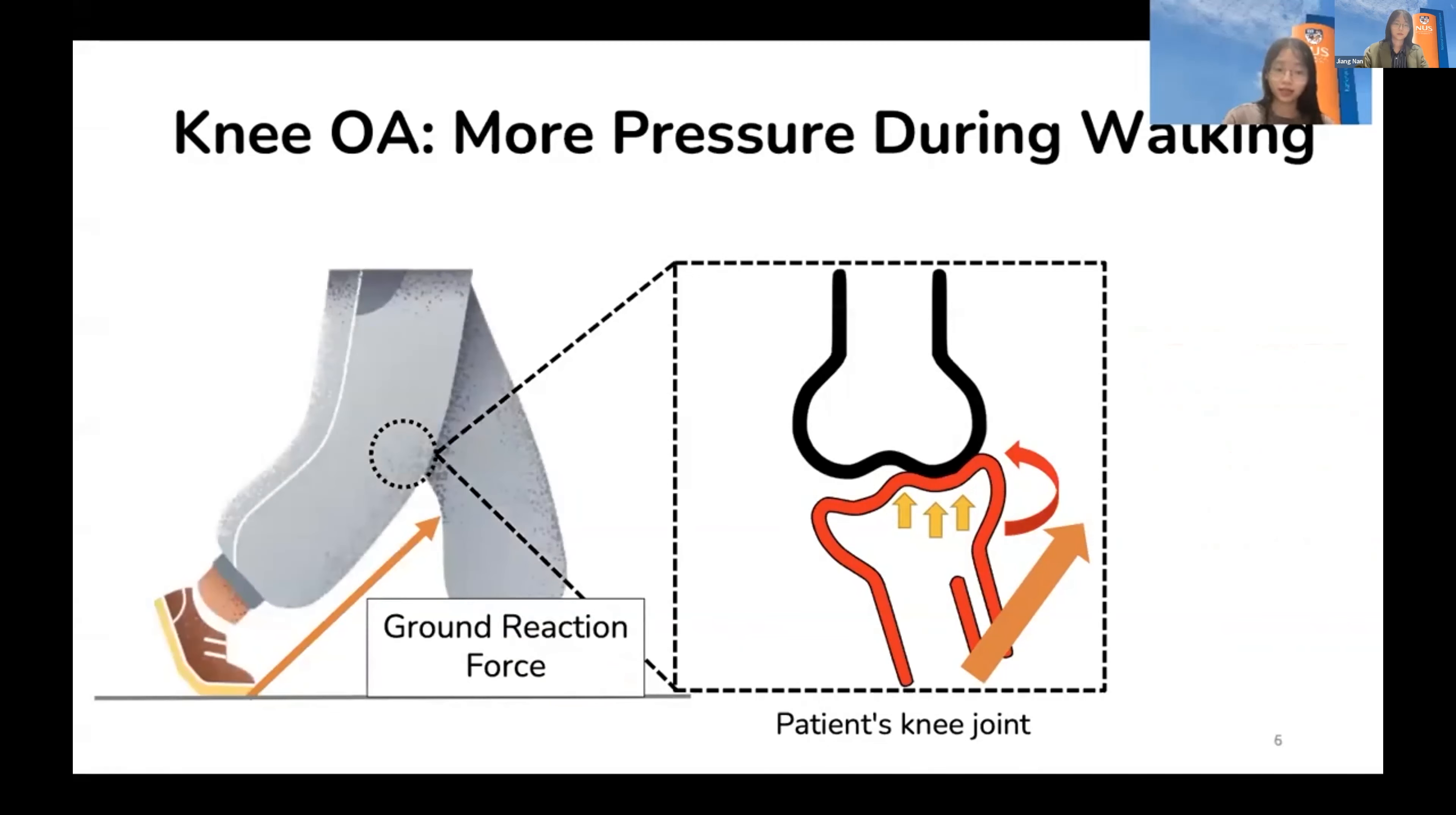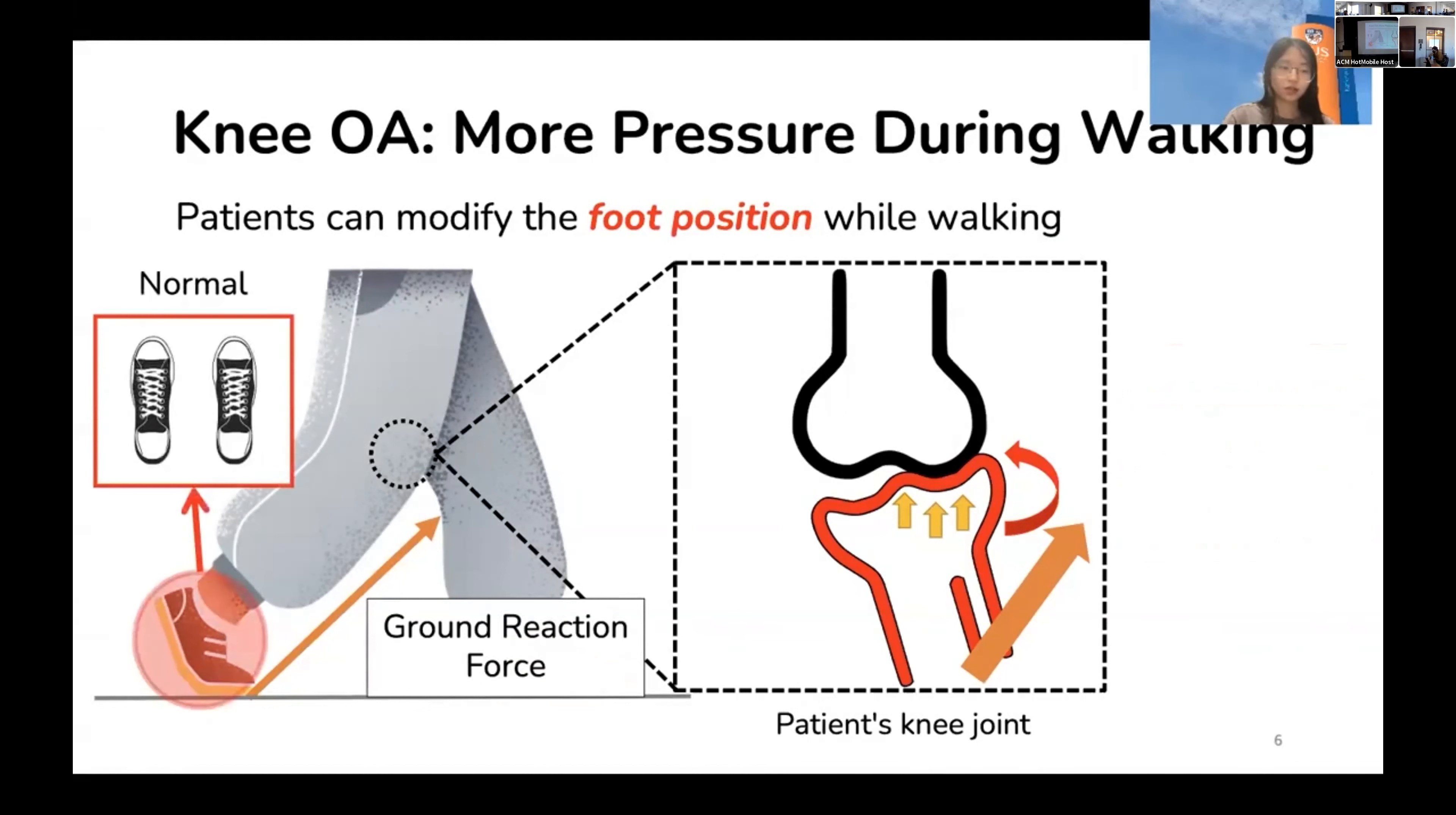So how to fix it? According to doctors, patients can simply modify their foot position to relieve the knee pain. Specifically, suppose a patient originally walks with the foot pointing straight forward, then the doctor can train the patients to walk in a way where they intentionally point the foot inwards, which is called toe-in, or point the foot outwards, which is called toe-out, to relieve the knee pain.